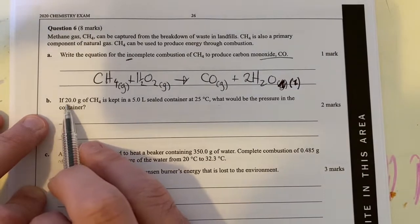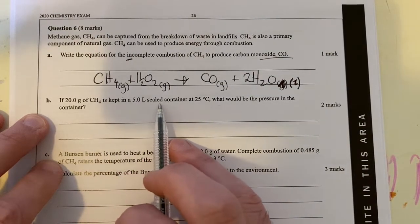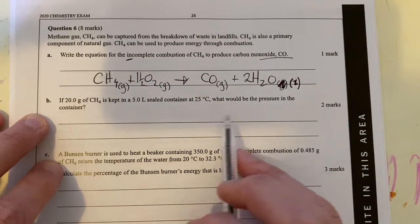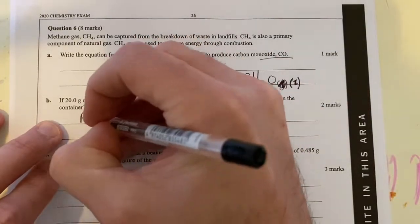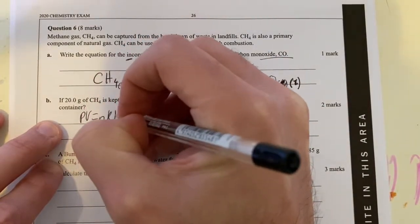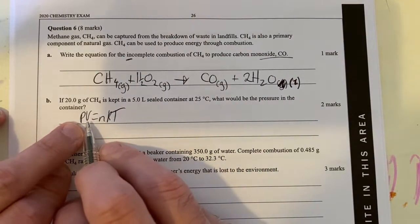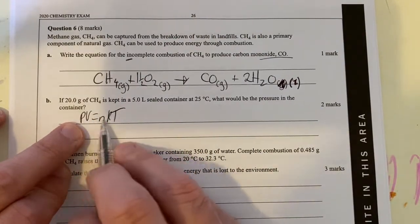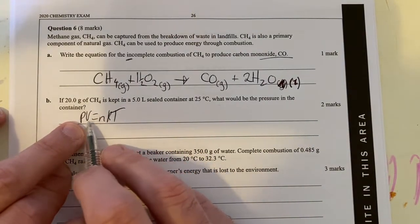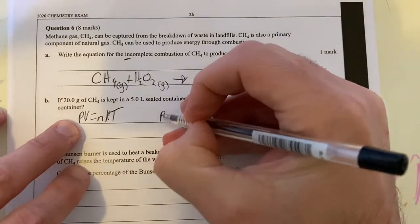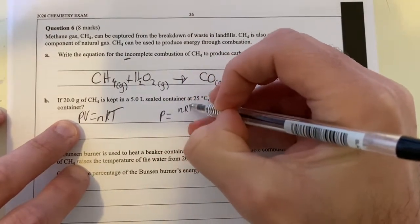Anyway, 20 grams of methane is kept at 5 liters in a steel container at 25 degrees Celsius. What would the pressure be? All right, this is a PV equals NRT equation. So we're using the universal gas constant here. I'm going to be looking for my pressure. So P equals NRT divided by V.